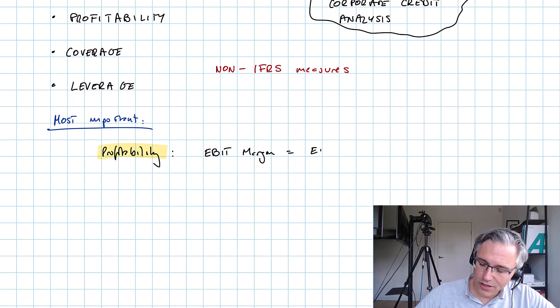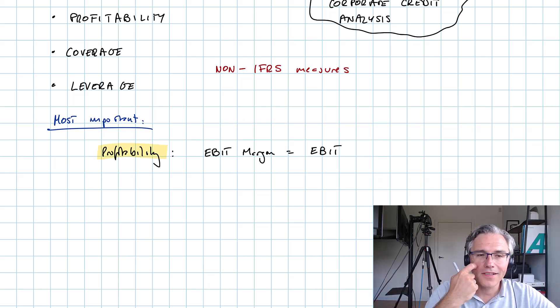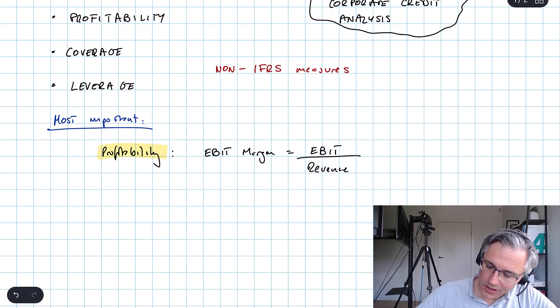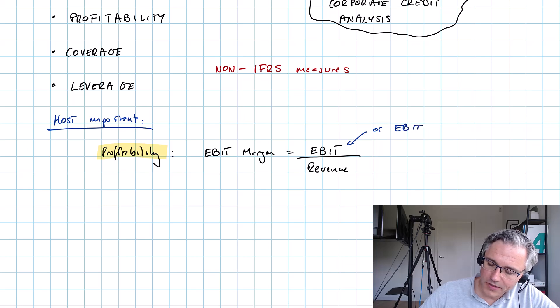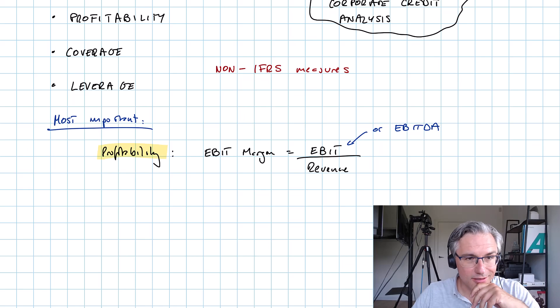So EBIT margin is the ratio that's mentioned in your curriculum. This is naturally the relationship between earnings before interest and taxes, so before we move on to the financing segment or financial segment of the income statement and the tax consequences, divided by the revenue generated by the business. And of course instead of EBIT you will often find EBITDA, which is earnings before interest, taxes, depreciation and amortization, which gets us somewhat closer to a cash flow measure.